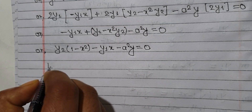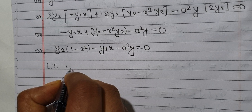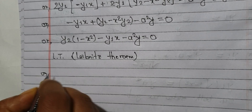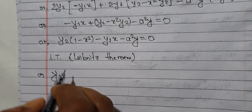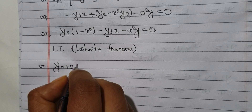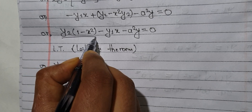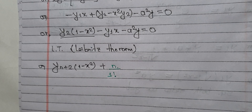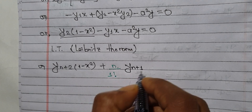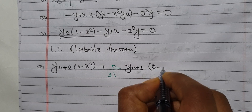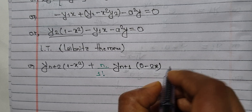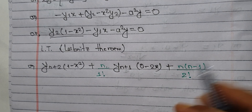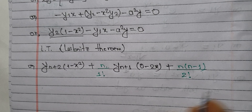Using Leibniz's theorem — this is the shortcut method. We apply Leibniz's theorem to differentiate (1 - x²)·y₂ minus x·y₁ minus a²·y equals 0, n times. For the term (1 - x²)·y₂, applying Leibniz's theorem gives: (1 - x²)·y_(n+2) plus n·(-2x)·y_(n+1) plus n(n-1)/2·(-2)·y_n.